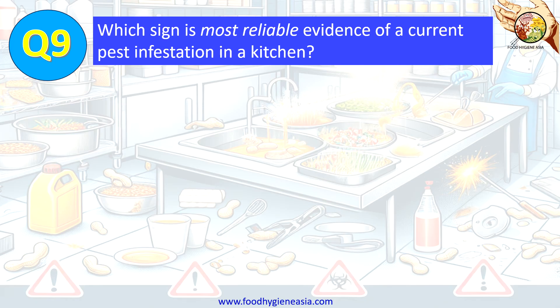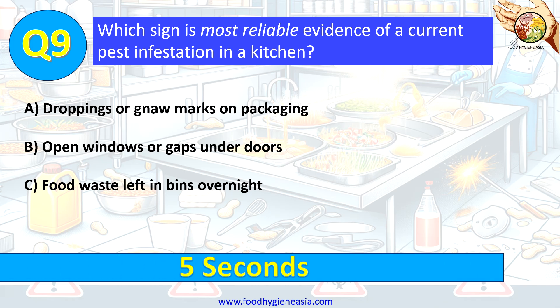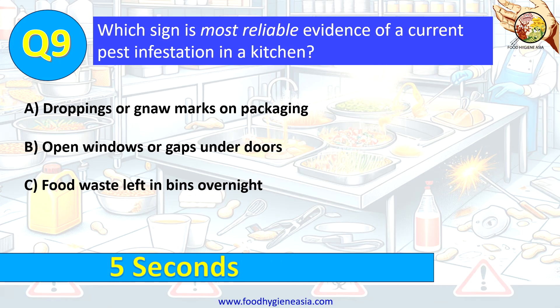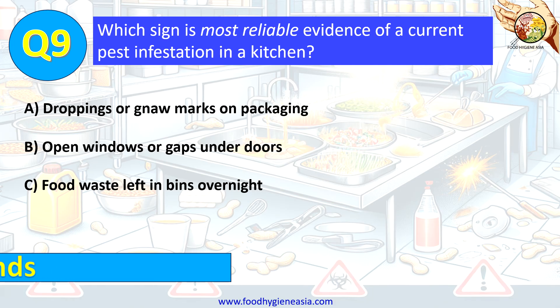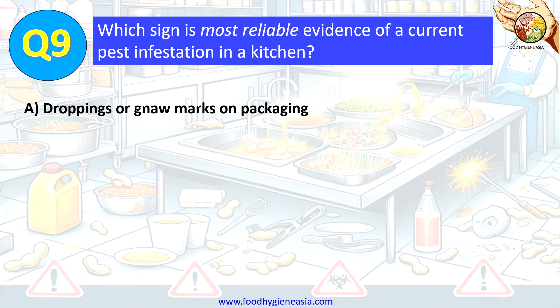Question 9. Which sign is most reliable evidence of a current pest infestation in a kitchen? A. Droppings or gnaw marks on packaging. B. Open windows or gaps under doors. C. Food waste left in bins overnight. The correct answer is A. Droppings or gnaw marks on packaging.